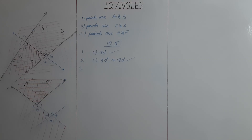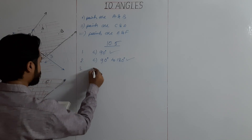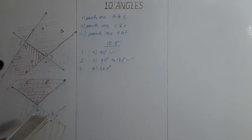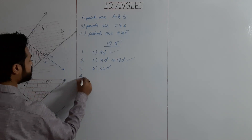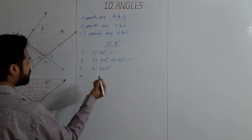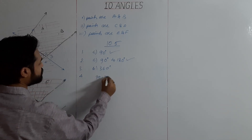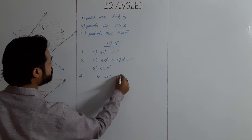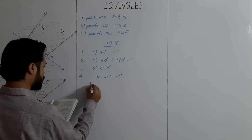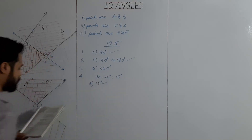Question 3: the measure of the angle at a point is — the total angle at a point is 360 degrees, so the answer is 360. Question 4: the complement of an angle of 75 degrees — complement means 90 minus 75, which gives 15 degrees. The answer is D, 15 degrees.